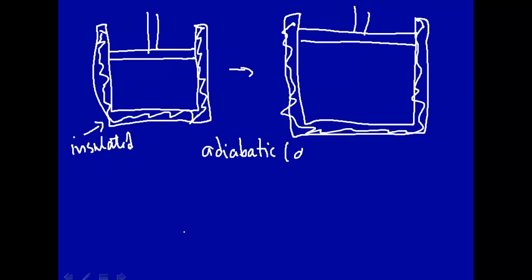And recall, adiabatic means q is equal to zero. Or dq, infinitesimal heat change, is equal to zero. So no heat can be transferred to and from this process.